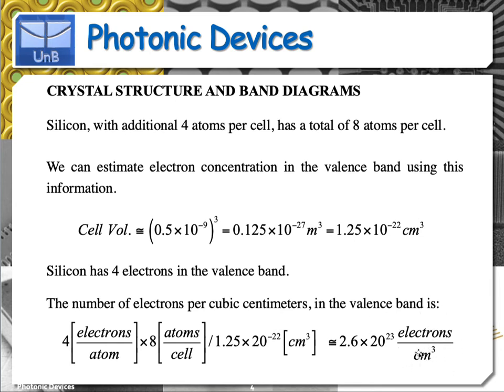So these are valence electrons, and this is an important number. It gives us an order of magnitude of how many electrons are in the valence band — electrons that can potentially gain energy and rise to the conduction band and be used for conducting electricity.